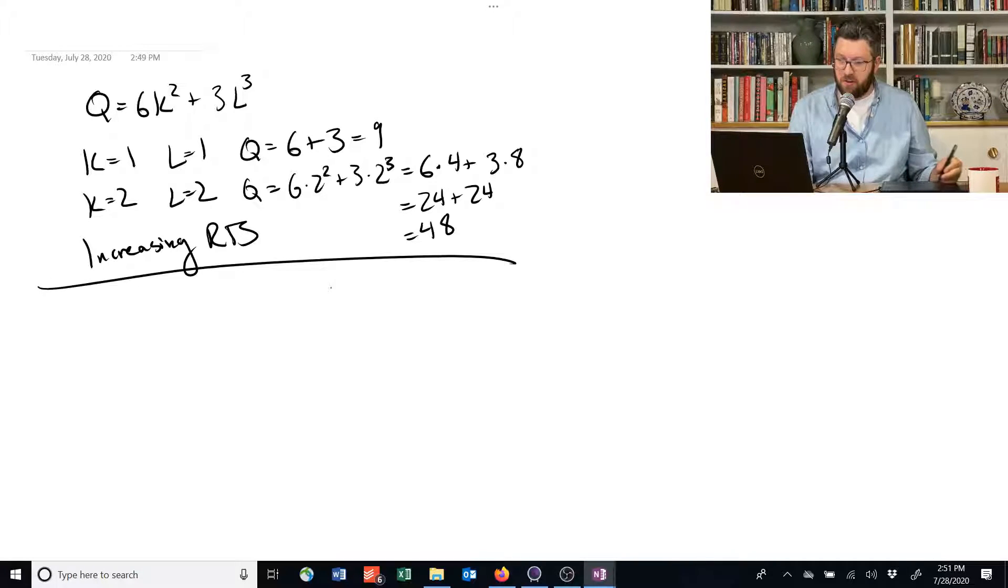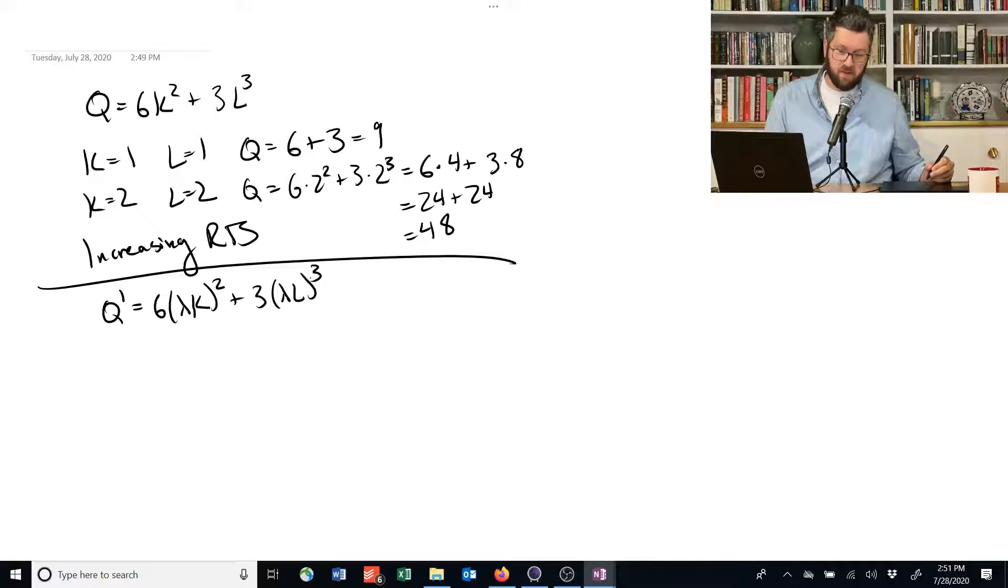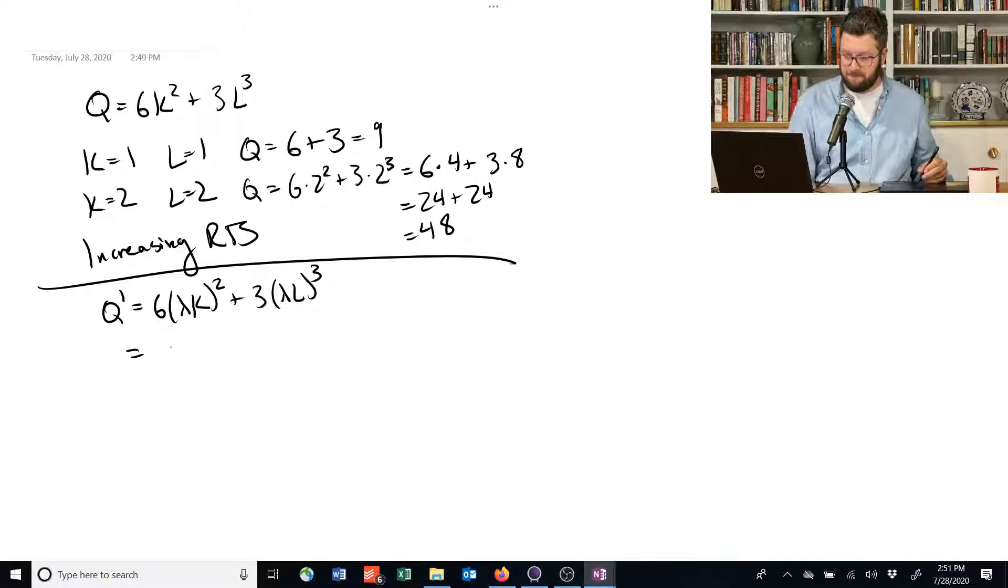You can also do it the other way that I tried to show. So if we have q equals 6k squared plus 3l cubed, we could say what's q prime equal to and scale up this thing by a constant amount. And in this case, it's not going to be very easy to do. So we're going to end up with 6 lambda squared times k squared plus 3 lambda cubed times l cubed.